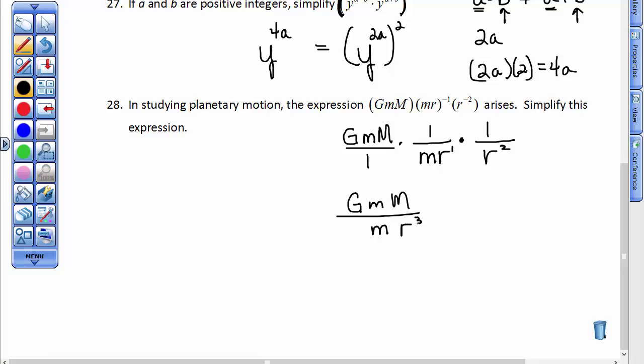And finally, now I have a fraction that I can reduce my common factors. So m over m is just equal to 1. I don't need to write it because I have other letters. So I have capital G, capital M, over r to the 3rd power. And this expression when studying planetary motion is much easier to work with than is this one. That concludes our study of exponents for now. We will be seeing them again and we'll be using them throughout the whole semester.